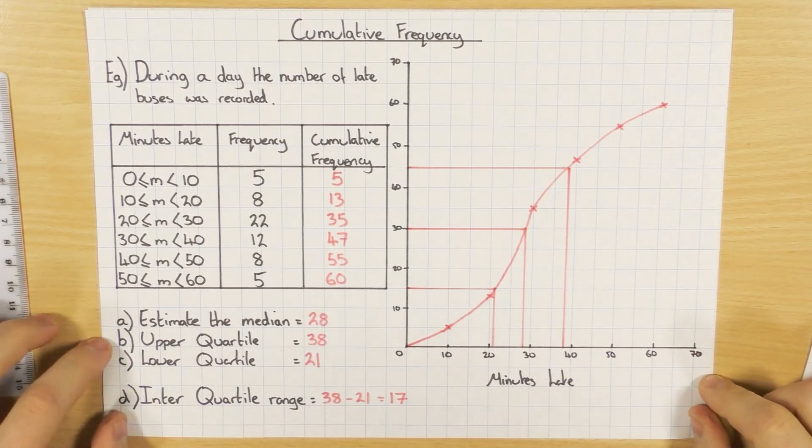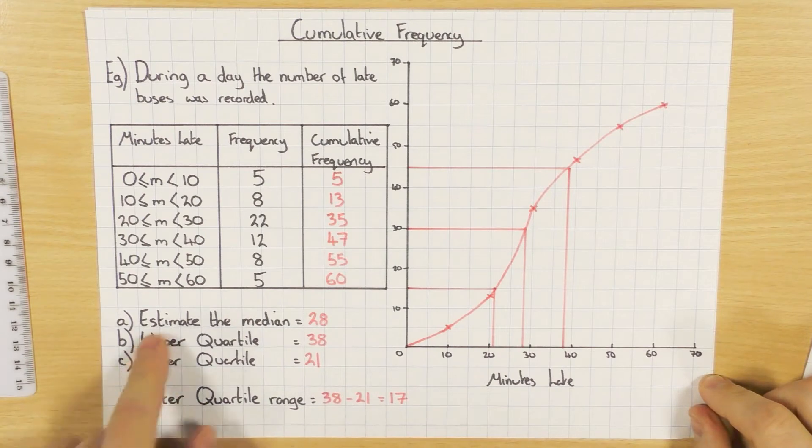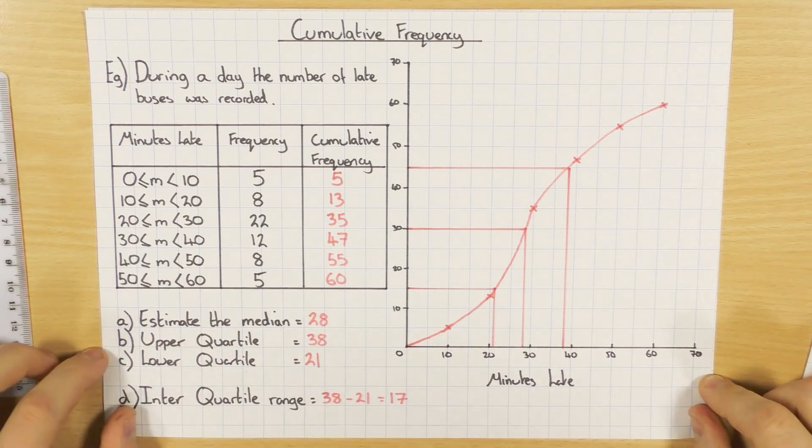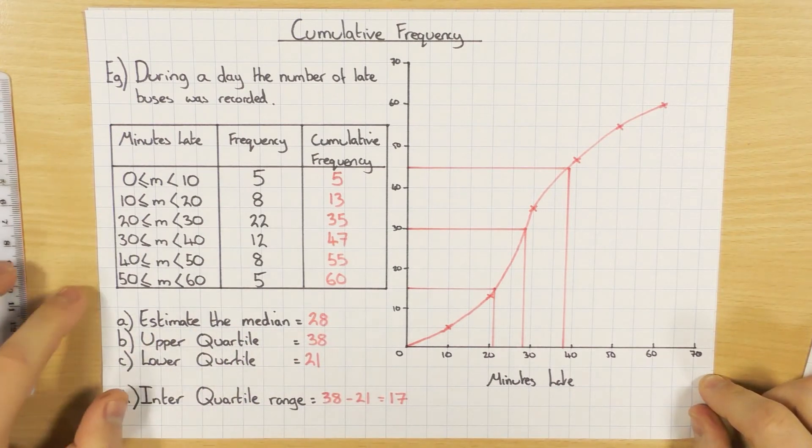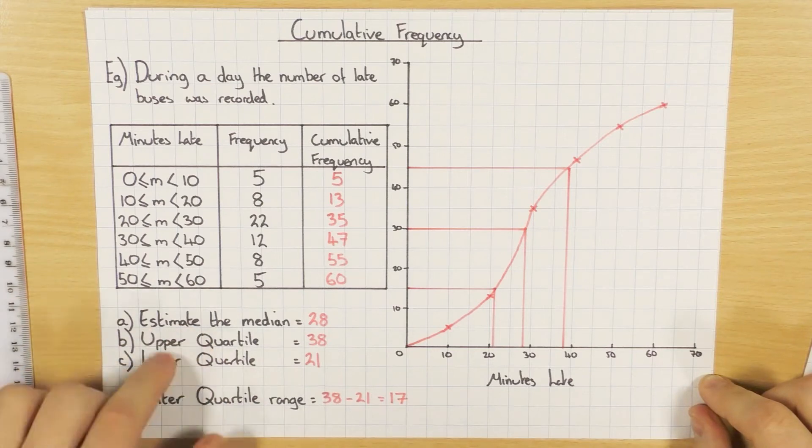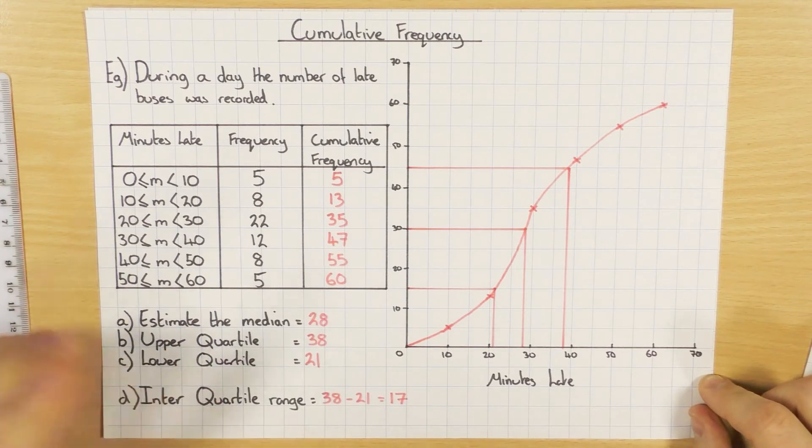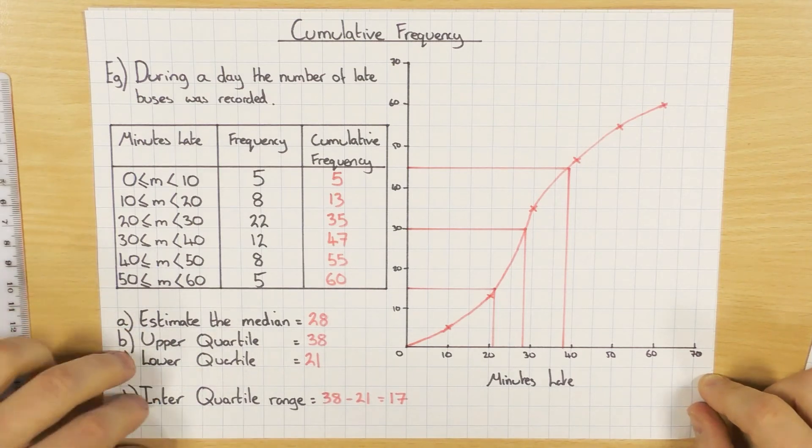So that's a very basic cumulative frequency. You might be asked, once you've done or found this information out, to draw a boxplot. I'm not going to do boxplots in this video. I'll do it in a separate one. But just so you're aware that these questions, cumulative frequency, and boxplots are usually linked. So I'll do a boxplot video soon. So that's one example. Let's have a look at another one.